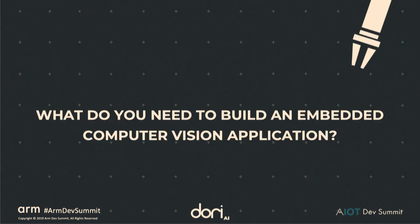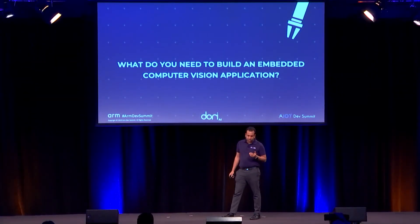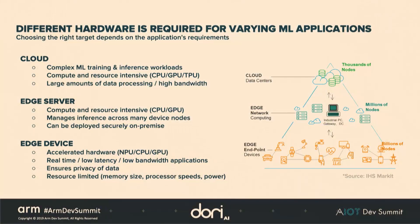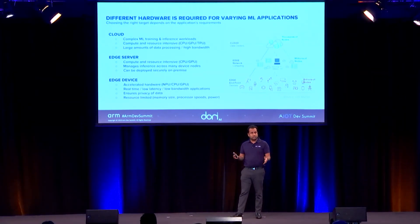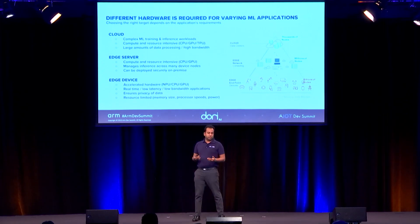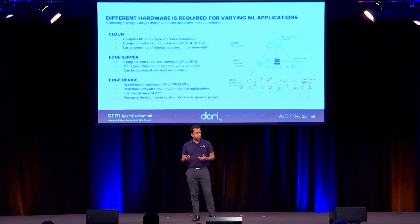What do you really need to build an embedded computer vision application? The first thing to consider is where you're going to deploy it. There are three main deployment targets: cloud, edge server, and edge devices. On the cloud, you'll schedule more resource-intensive and compute-intensive workloads, whereas on the edge you're much more constrained — you have to worry about latency, bandwidth, privacy of data, and resource limitations of memory, processing speed, and power. The solution may end up being a very hybrid one.